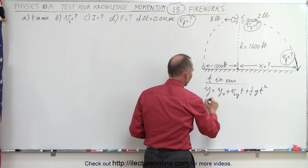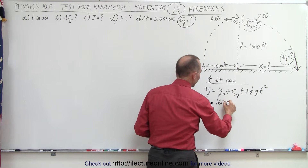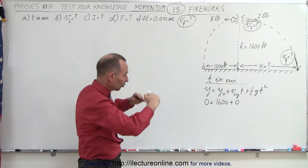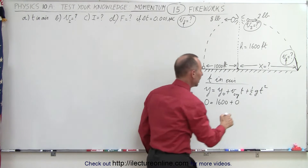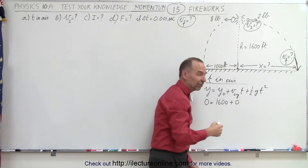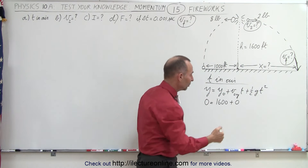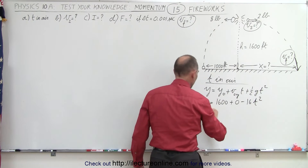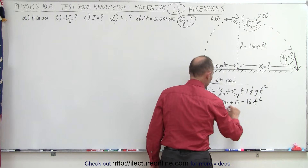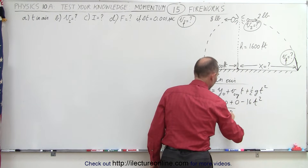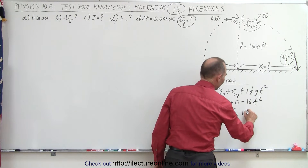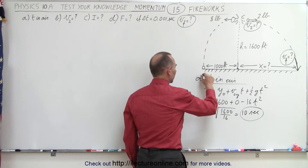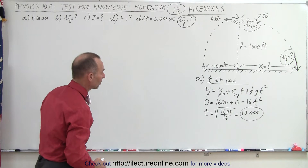The final height will be 0. The initial height will be 600. The initial velocity in the y direction is 0 because they have just reached their maximum height — there's no vertical velocity. Since g is minus 32 feet per second squared, we take half of that, which is minus 16 times t-squared, which means t equals the square root of 600 divided by 16, giving us 10 seconds in the air.